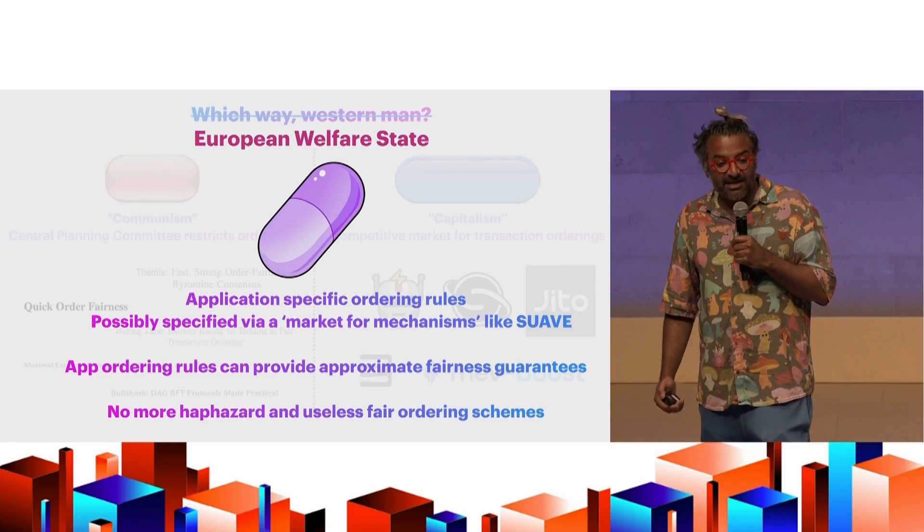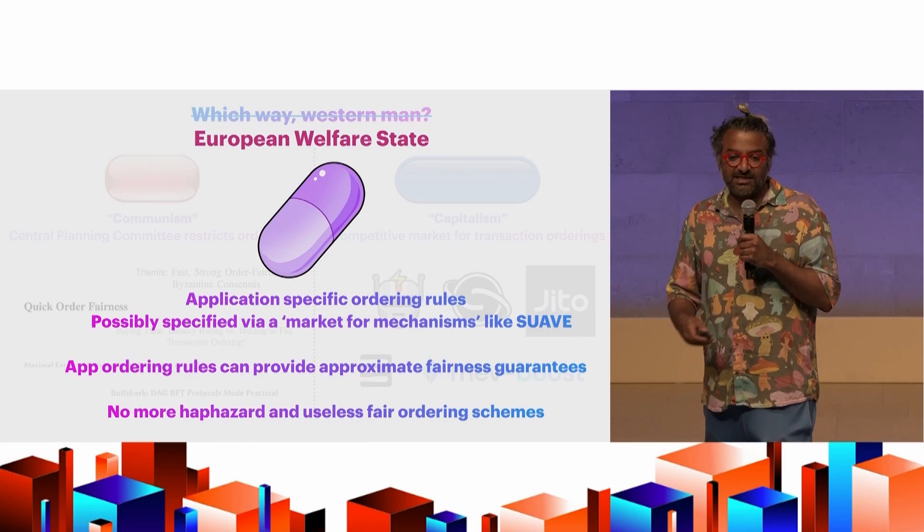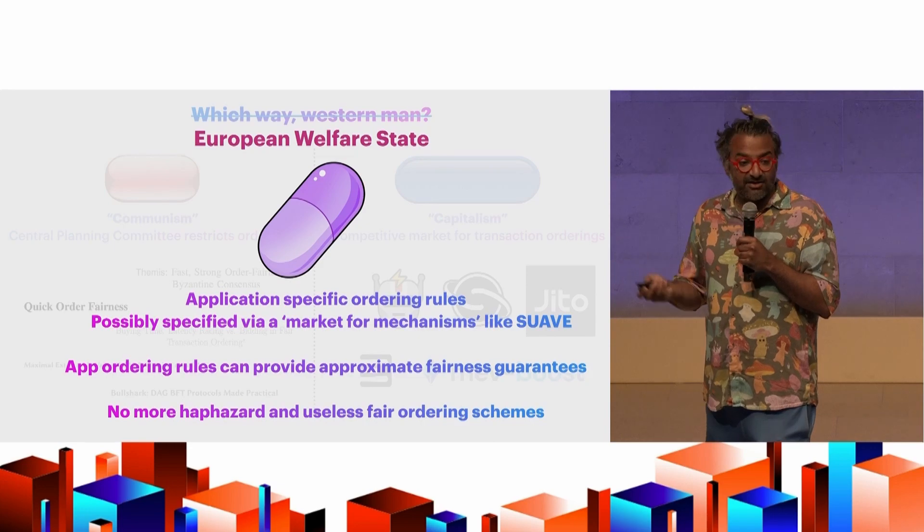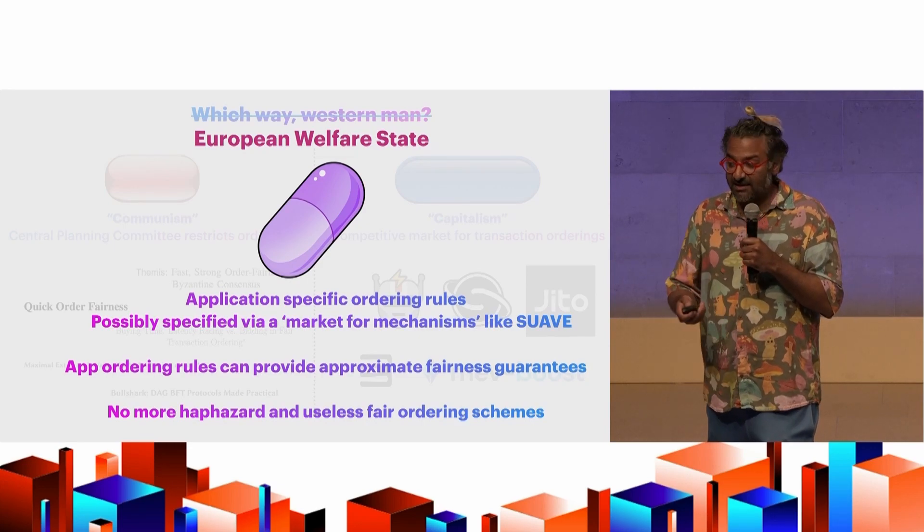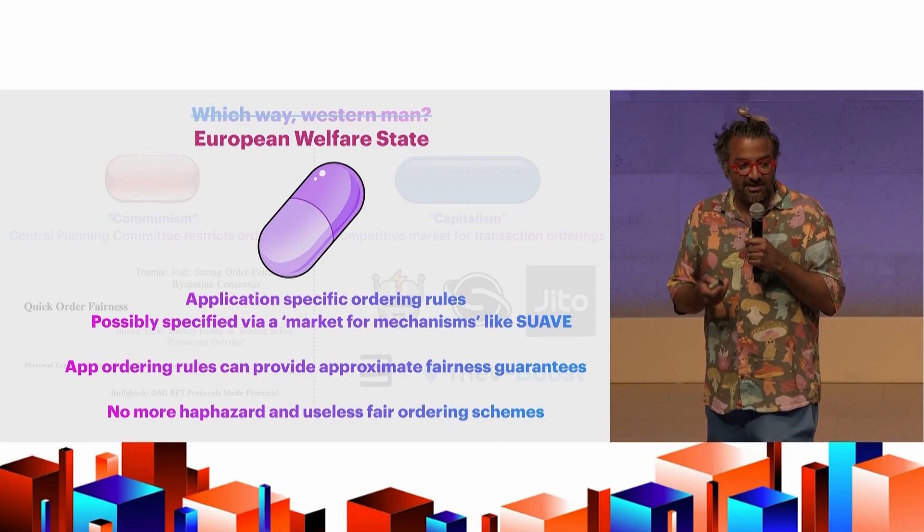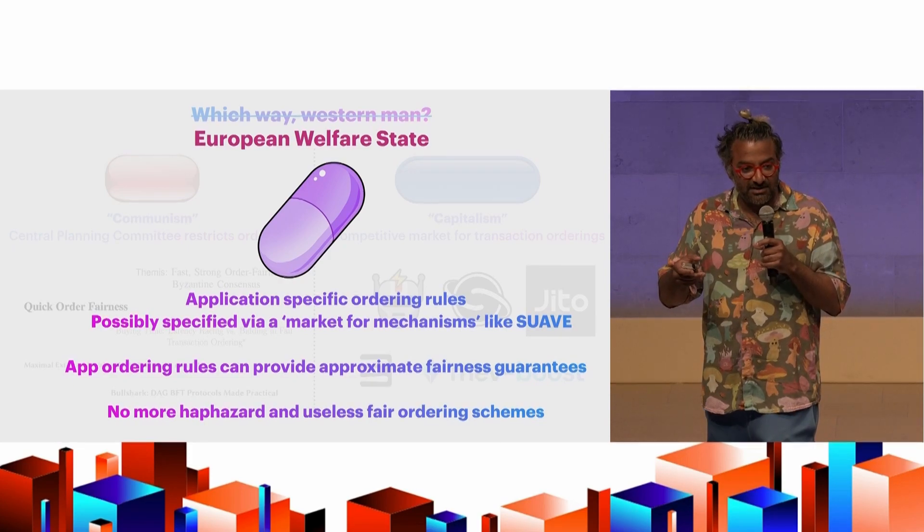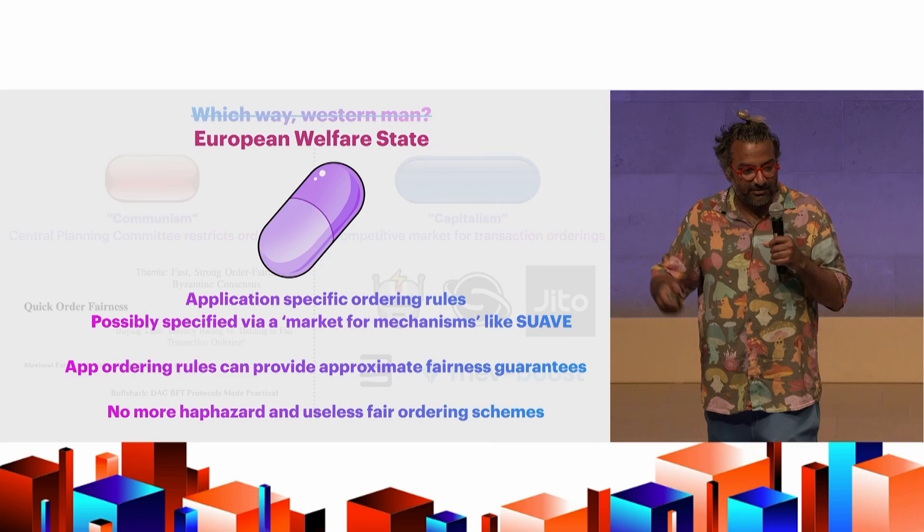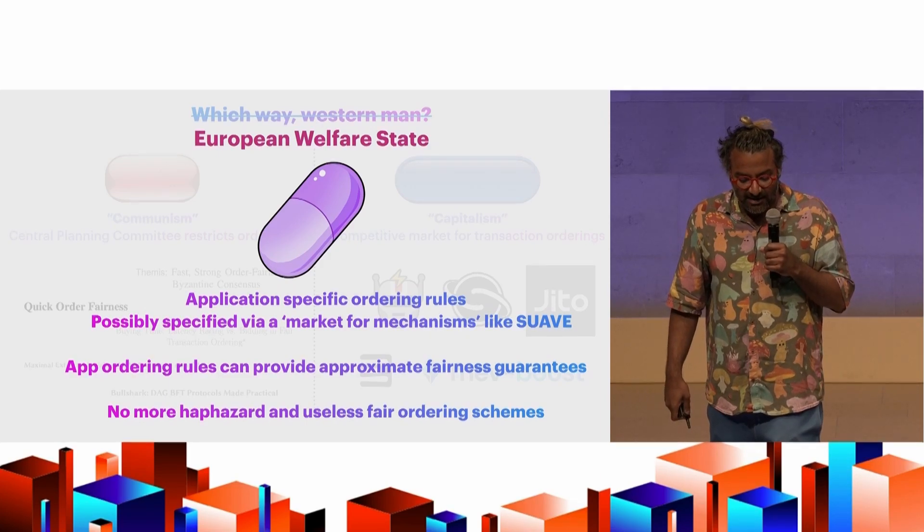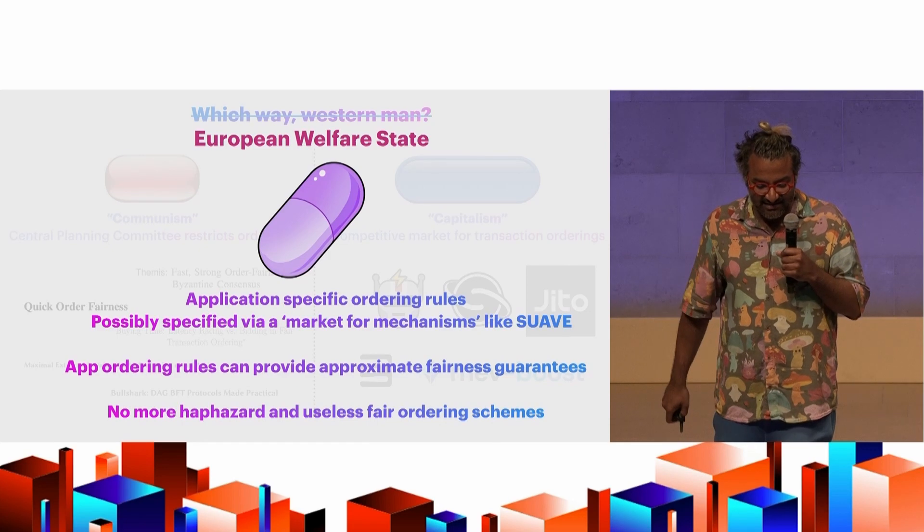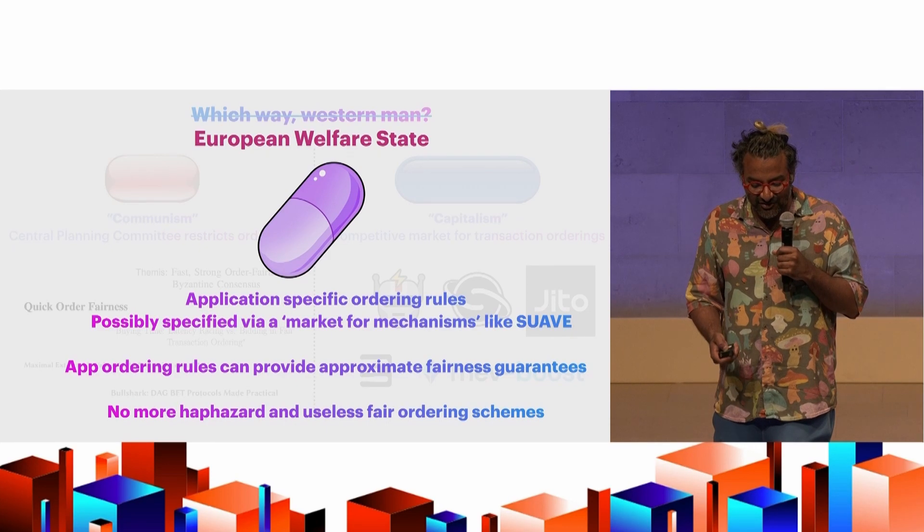And now you're forcing the application developer to understand that, whereas that's not as true in the unrestricted ordering case. But what this says is application-specific orderings, orderings tied to these functions are actually, can be better in practice. And maybe that comes from marketplaces like Suave, things that allow each application to specify some sets of rules, as opposed to having these global sets of rules. And yeah, it's much rather than sort of some of the useless communist versions of things.